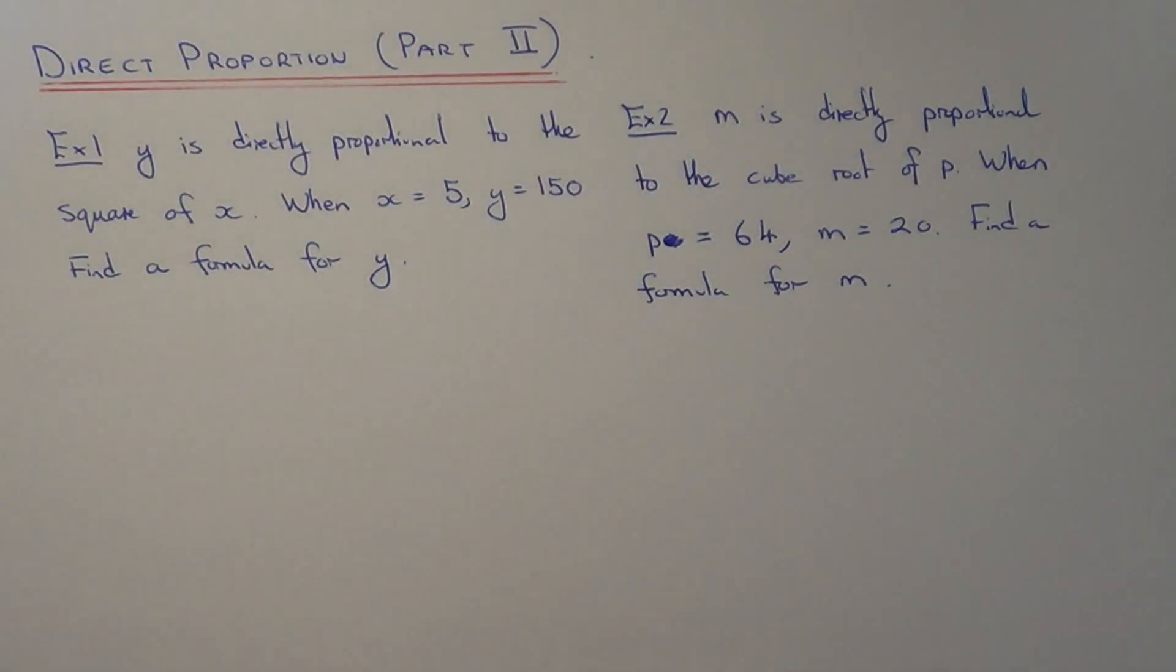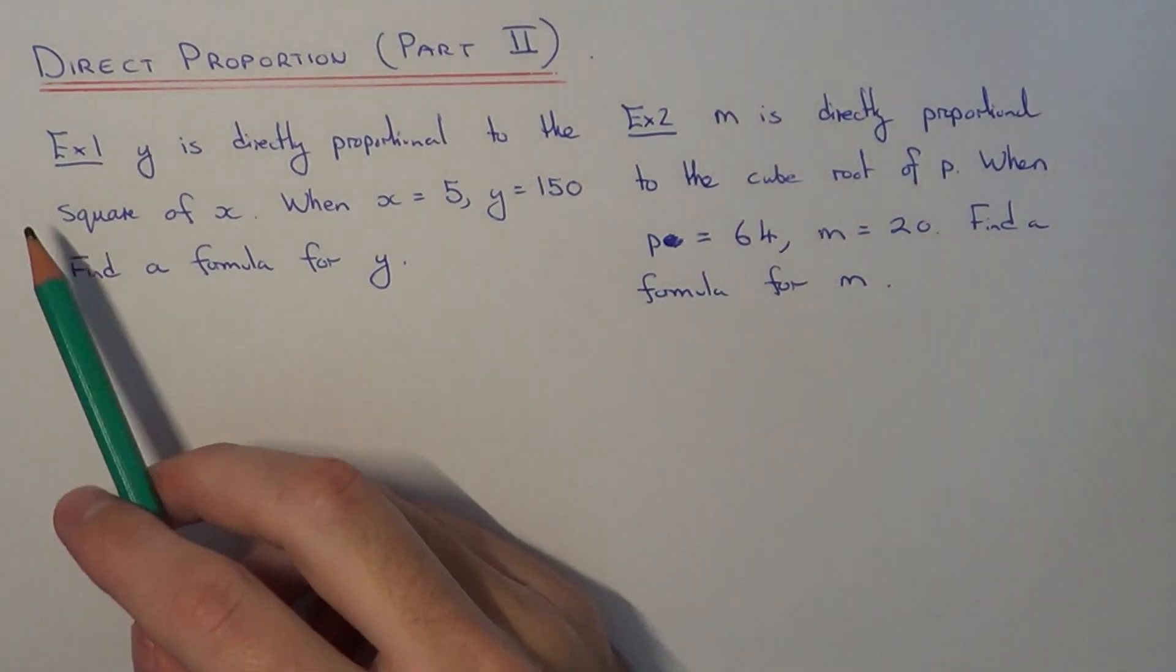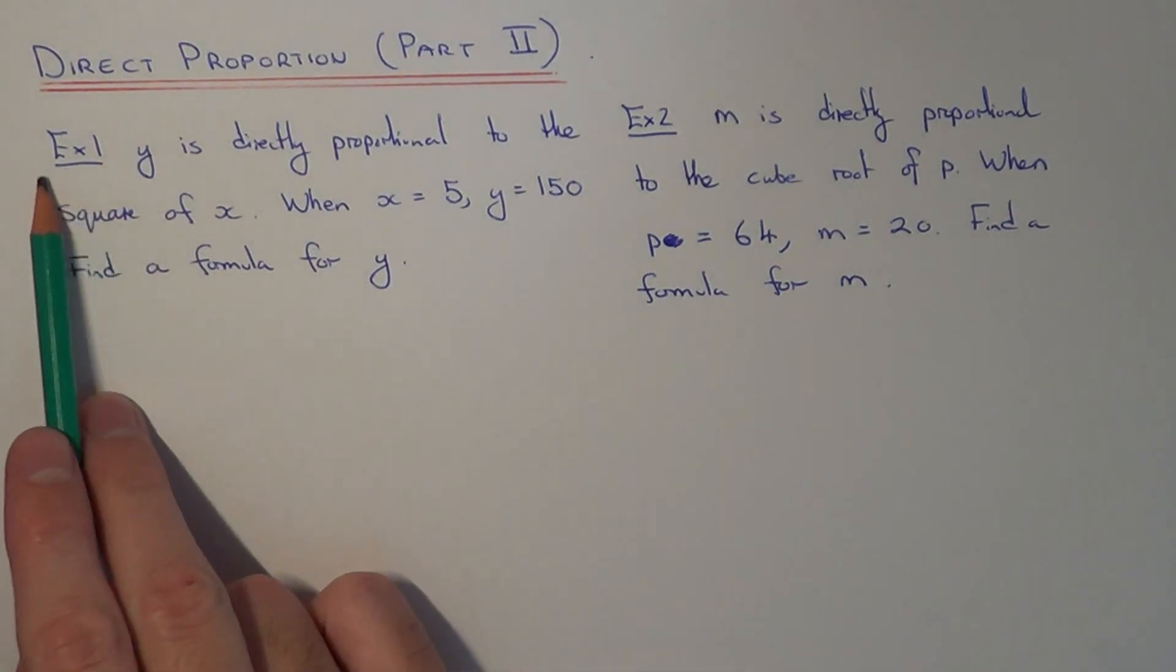Hi, welcome to my second part on direct proportion. These examples involve looking at formulas with squares and cubes, square roots and cube roots. These are a little bit harder than the first ones I did in the first part.